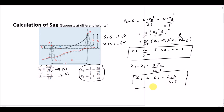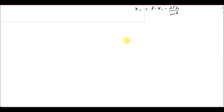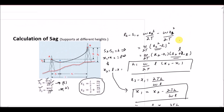We know that x2 = L − x1, so substituting into the equation for x1: x1 = (L − x1) − 2Th over WL. After solving, 2x1 = L − 2TH over WL, giving x1 = L/2 − TH over WL. Here x1 is the distance from the lowest point of the conductor to the support point at tower A.